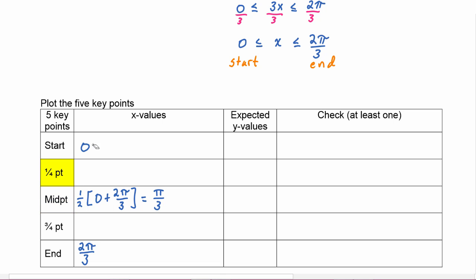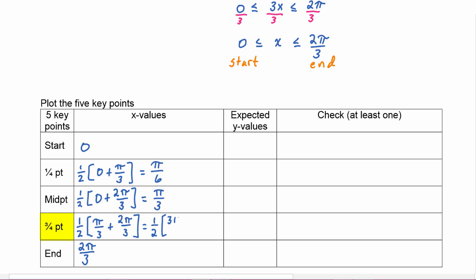To find the quarter point we take the midpoint of zero and pi over three, add them and divide by two. Zero plus pi over three, dividing by two gives pi over six. To find the three-quarter point we find the midpoint between pi over three and two pi over three: adding those gives three pi over three, which is pi, so half of that is pi over two.